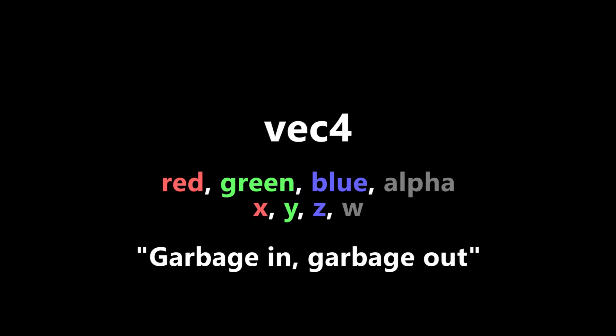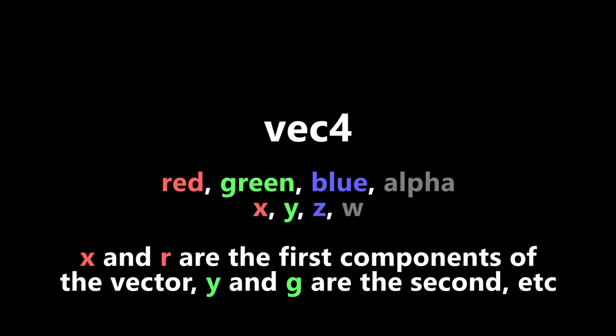In shader languages you can use the x, y, z, and w properties of a Vector 4 interchangeably with the red, green, blue, and alpha properties. You can mix them, match them, do whatever you want. All they do is refer to different components of that vector in a certain order. So x and r are the first components, y and green are the second components, and so on.